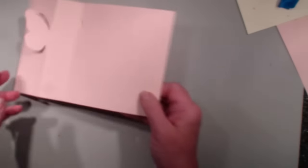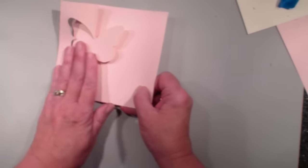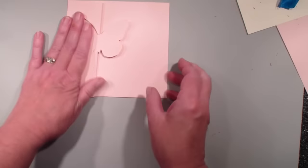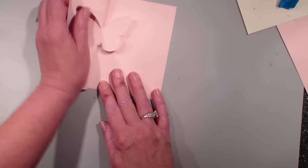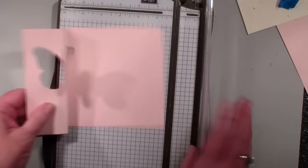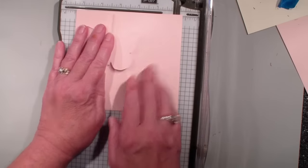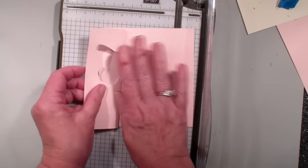But I did forget to do one thing. I want this card to be a 4 and a quarter by 5 and a half. So I'm going to take and score this card at 5 and a half.